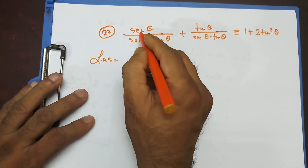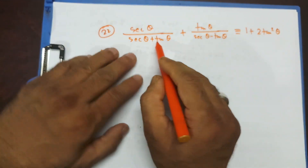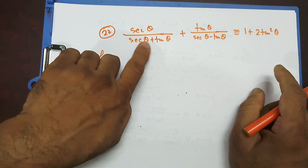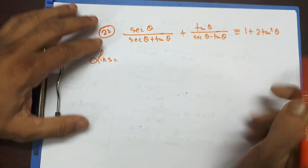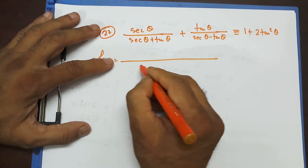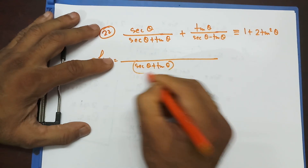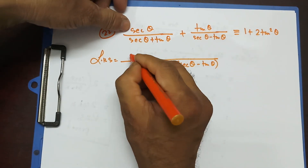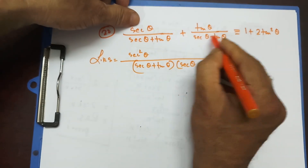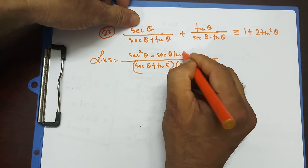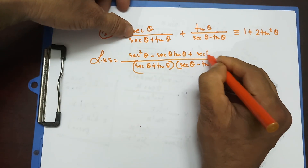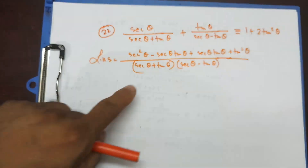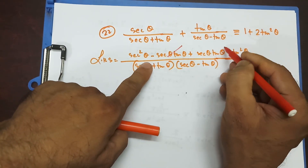So for the left hand side, I can see this is in the form of (a + b)(a − b), which gives a² − b². So I'll multiply out: (sec θ + tan θ)(sec θ − tan θ) gives sec²θ minus sec θ tan θ plus sec θ tan θ minus tan²θ. The minus sec θ tan θ and plus sec θ tan θ cancel out.